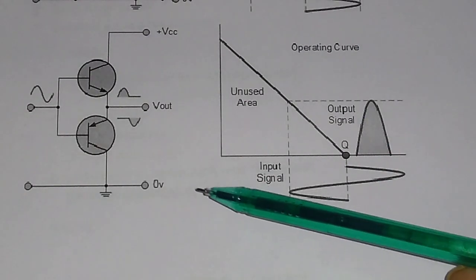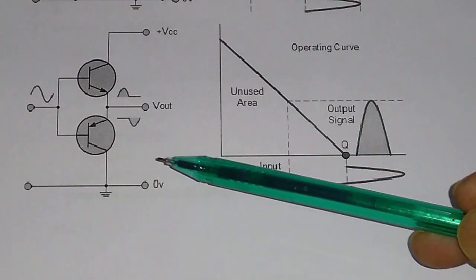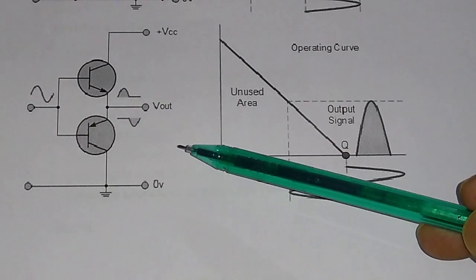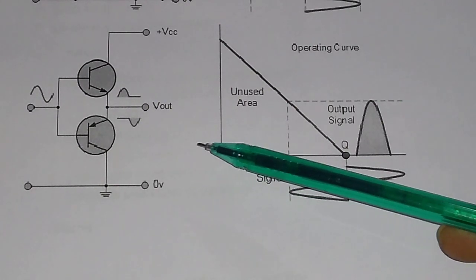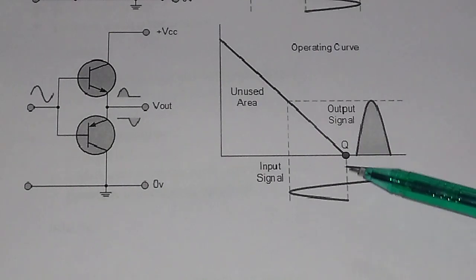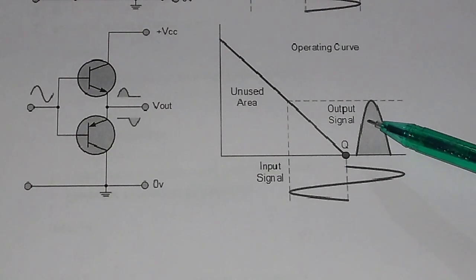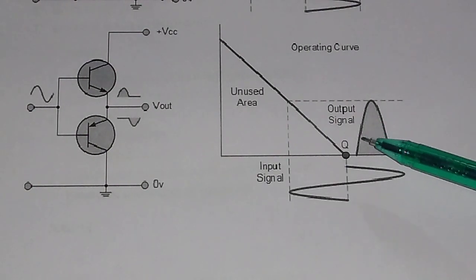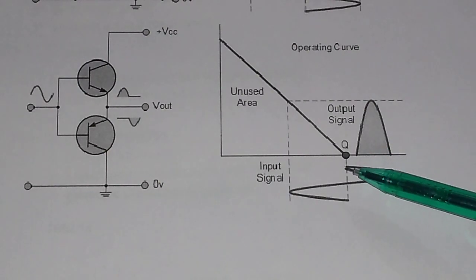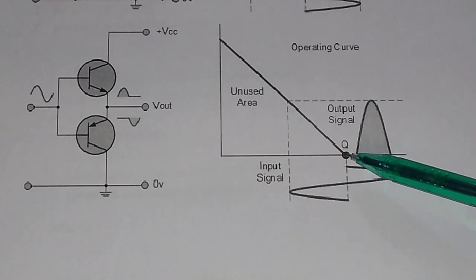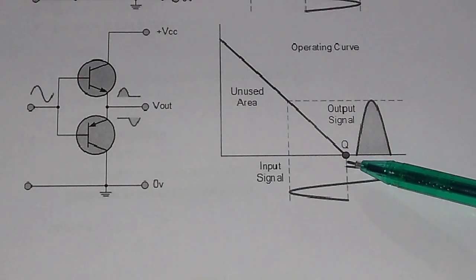This is the circuit diagram for the class B amplifier. Class B amplifier is also called a push-pull amplifier. In this amplifier, the collector current flows for half cycle of the input AC signal. The Q point is at the cutoff, meaning there is no current due to the DC source — the Q point arises due to the biasing potential.